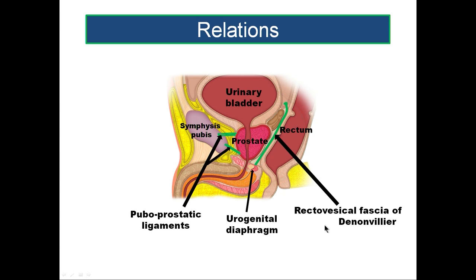This fascial sheath is called the rectovesical fascia of Denonvilliers. It extends from the rectovesical pouch of peritoneum to the perineal body. Initially during development the rectovesical pouch extends downwards to the perineal body, but later it obliterates from below upwards, forming a fascial sheath by the union of the two peritoneal layers — the floor moves upwards, and this sheath formed is the rectovesical fascia of Denonvilliers.